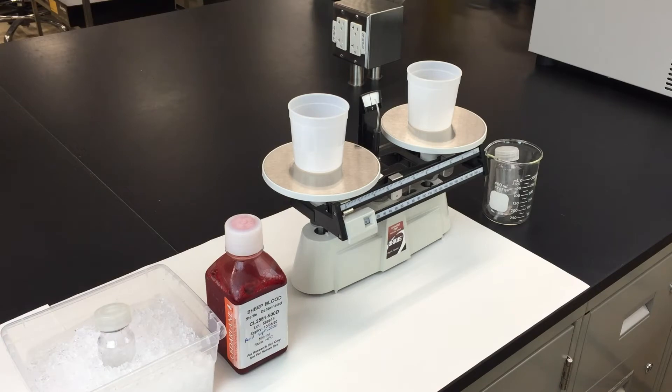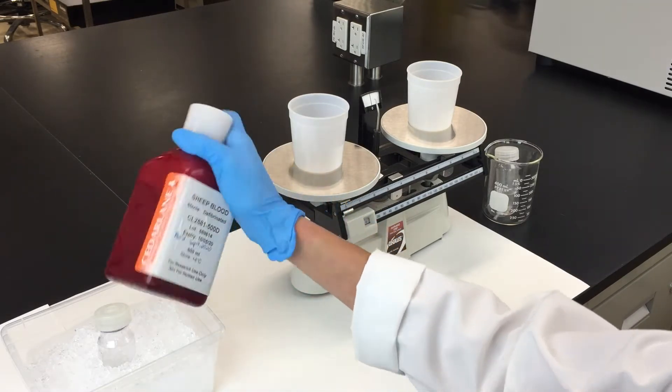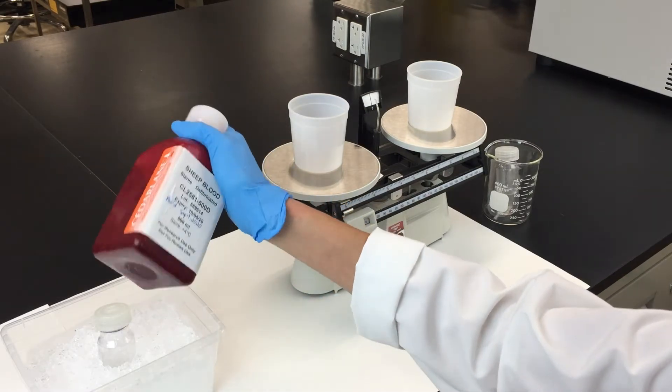For this experiment, the hemolysate has already been prepared for you, but it's important that you know how it's made. We'll start with a bottle of defibrinated, sterile sheep's blood. Take the bottle and invert it several times to re-suspend the red blood cells.